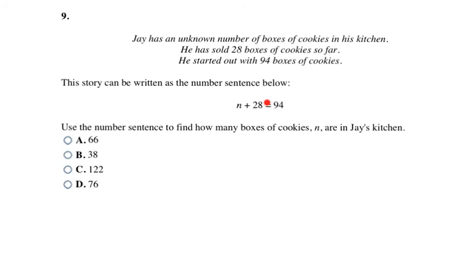So you can take all of these choices here and plug them in and see which one adds you to 94. So does 66 plus 28 give you 94? Does 38 plus 28 give you 94? Does 122 plus 28 equal 94? And does 76 plus 28 equal 94? So which one of those is going to be true? Or you can do opposite operations, which says that since it's addition here, if I subtract these two numbers, then I will get 66. And so 66 is going to be my final answer, which is choice A.